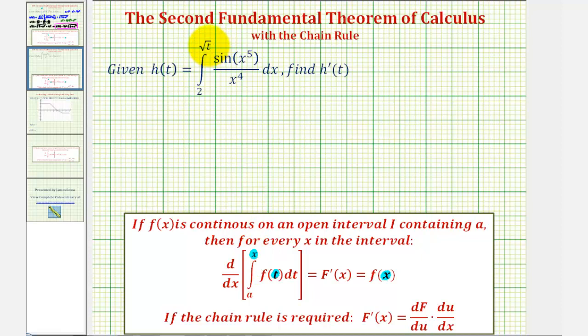Notice in our case, though, we have the square root of t. Because this is not just t, we'll have to apply the chain rule to find h prime of t.